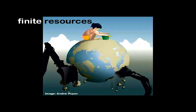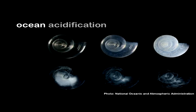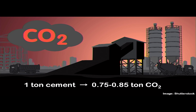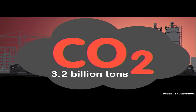So what's the problem? The problem is finite natural resources. The problem is acidification of our oceans. The problem is climate change. For every tonne of cement that we produce through the crushing, heating and grinding of limestone, over three quarters of a tonne of carbon dioxide is released into our planet's atmosphere. This will equal over 3.2 billion tonnes of carbon dioxide this year alone.